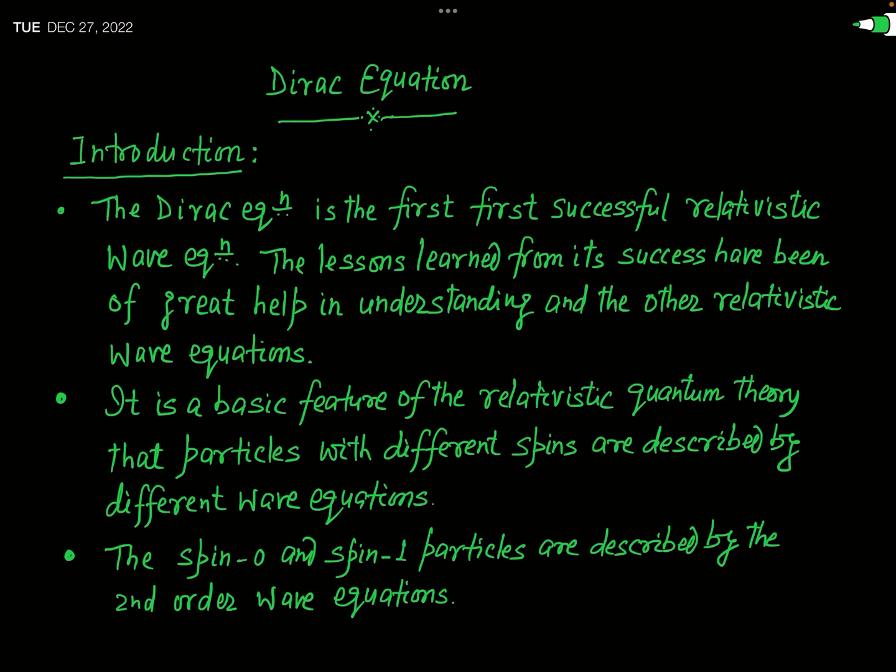In the previous few lectures we have discussed in very detail the Klein-Gordon equation. The Klein-Gordon equation is a relativistic wave equation. But there is a very important limitation: a particle like an electron cannot be described in terms of the Klein-Gordon equation, because the electron is a half-spin particle. The Klein-Gordon equation is applicable only for particles having zero spin, and that is why the application of the Klein-Gordon equation is very limited.